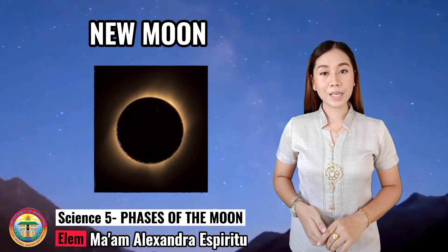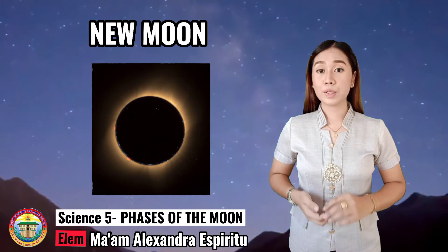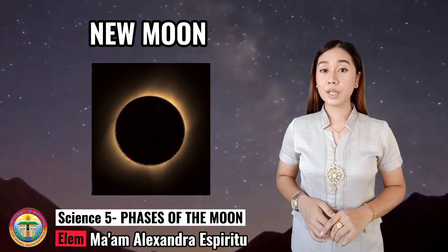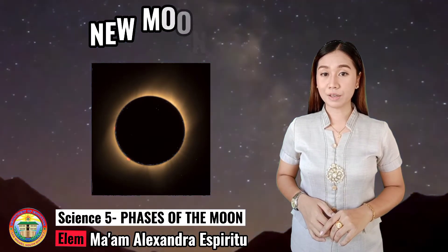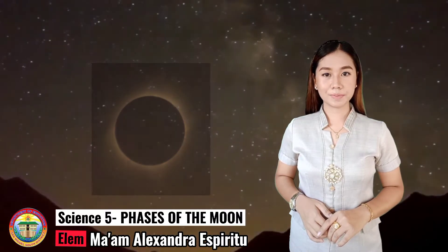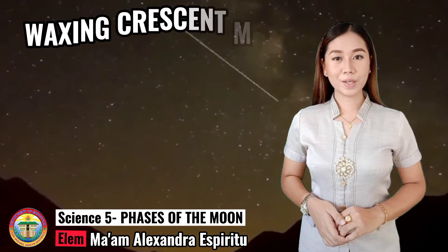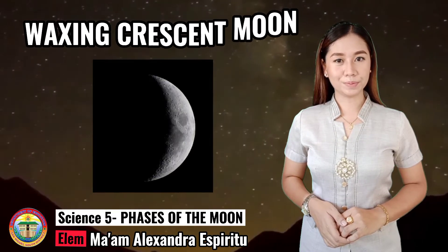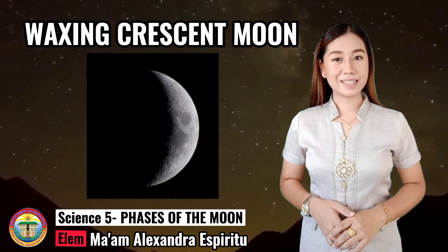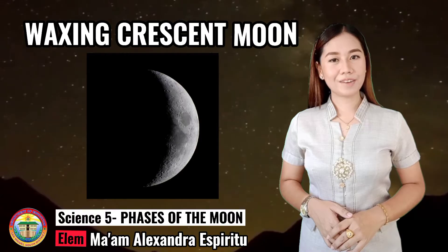when the Moon is dark and invisible to us, because the Moon is between the Sun and the Earth. The illuminated side of the Moon faces away from us. Next is the Waxing Crescent Moon — it is when we can only see a sliver of the Moon disk on the right-hand side.